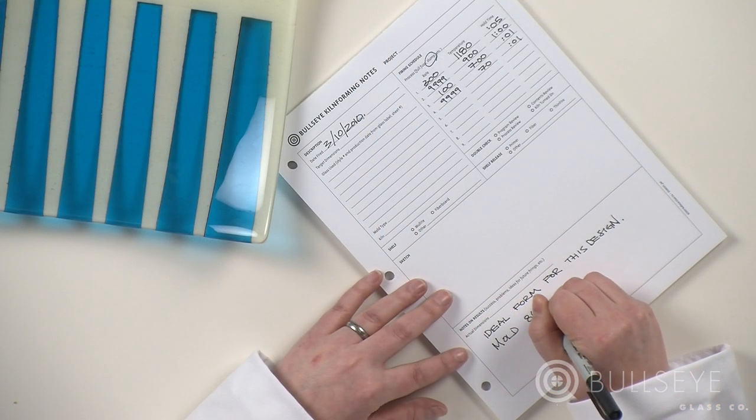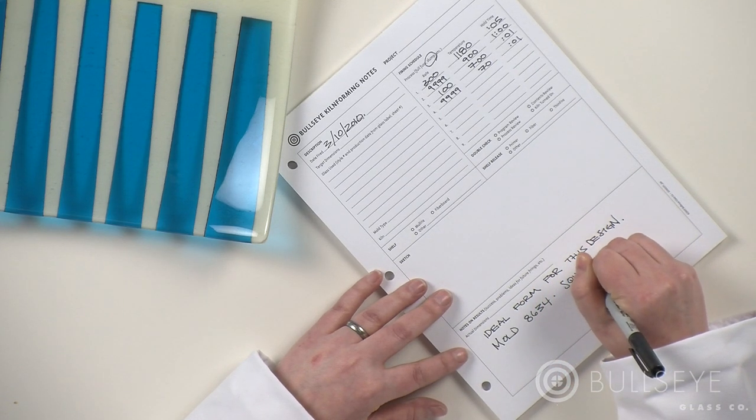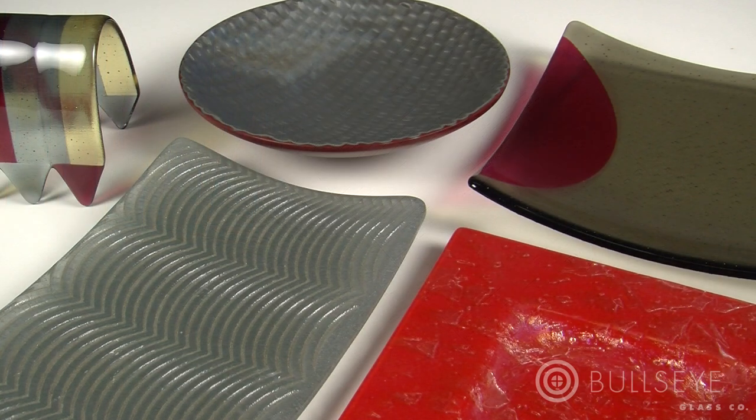Make detailed observations and take notes to help yourself learn and repeat your successes. Once you have mastered the basics of preparing, setting up, and firing commercial ceramic molds, you are well on your way to exploring the world of slumping glass.